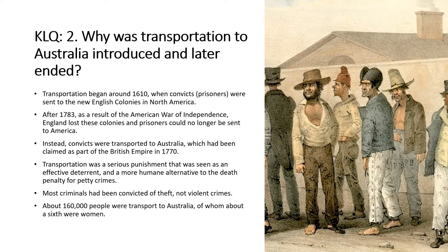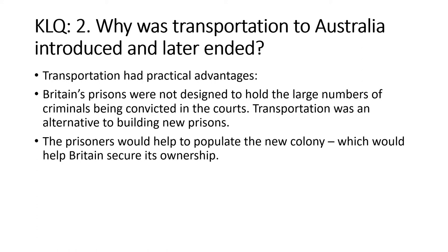Transportation was still considered a serious punishment seen as an effective deterrent — that means it was supposed to put people off committing a crime — but it was more humane, that's less cruel, than the alternative of the death penalty for petty crimes. Most of the criminals transported to Australia had been convicted of theft, not violent crimes. About 160,000 people were transported to Australia, of whom about a sixth were women.